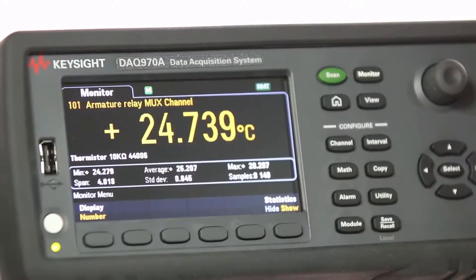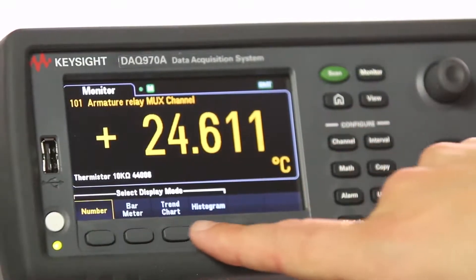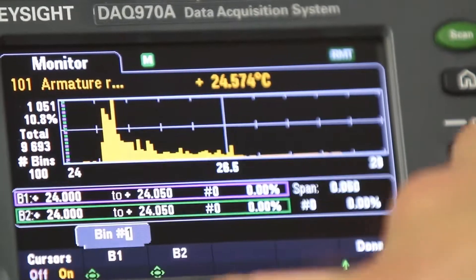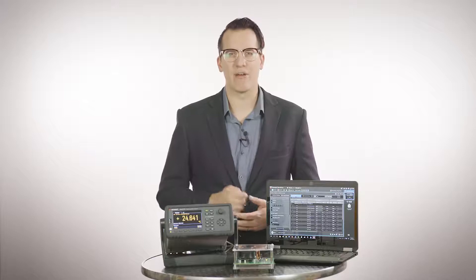On top of the 11 measurement types that the previous generation could measure, the DAQ 970A can measure diodes and capacitance. And it can measure very low current ranges, 1 microamp DC and 100 microamps AC, and it has a higher resistance range of 1,000 megaohms.